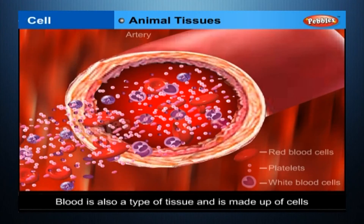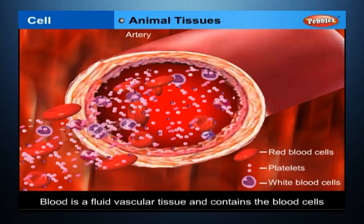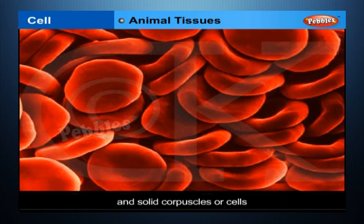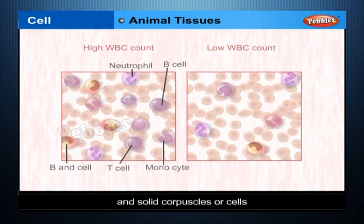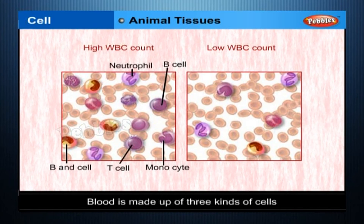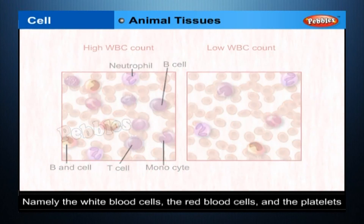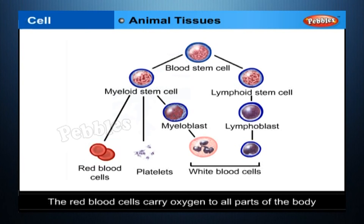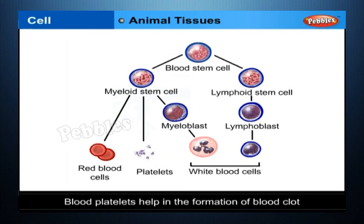Animal Tissues. Blood is also a type of tissue and is made up of cells. Blood is a fluid vascular tissue and contains blood cells. It consists of plasma — the extracellular fluid (ECF) — and solid corpuscles or cells. If a slide of blood smear is viewed under a microscope, one would find blood to be made up of three kinds of cells: white blood cells, red blood cells and platelets. The red blood cells carry oxygen to all parts of the body. The white blood cells help to fight infections. Blood platelets help in the formation of blood clots.